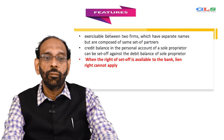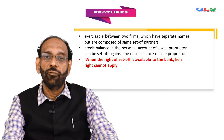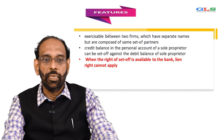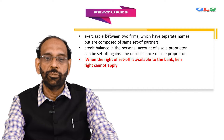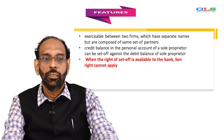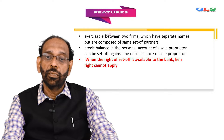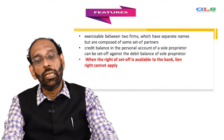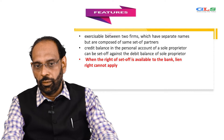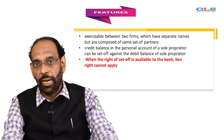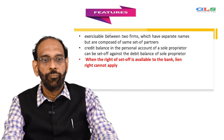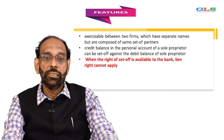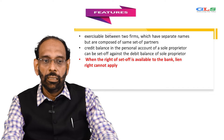Credit balance in the personal account of a sole proprietor can be set off against the debit balance of the sole proprietor. Set-off can be exercised between two firms with the same set of partners — that is, firms which have separate names but are composed of the same set of partners. When the right of set-off is available to the bank, the lien right cannot apply.